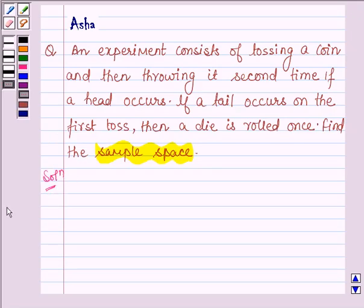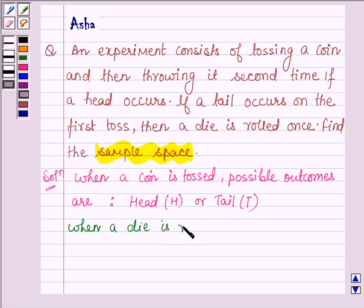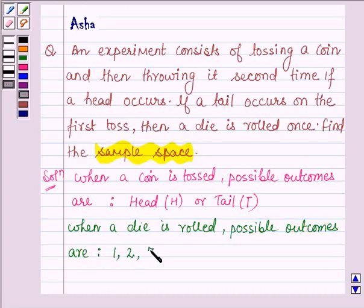So let's start with the solution. When a coin is tossed, possible outcomes are either head or tail. Let us denote the head by H and tail by T. And when a die is rolled, possible outcomes are 1, 2, 3, 4, 5 and 6.